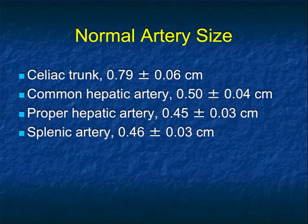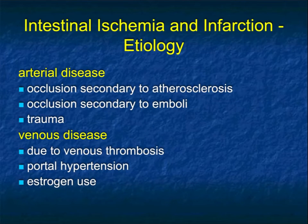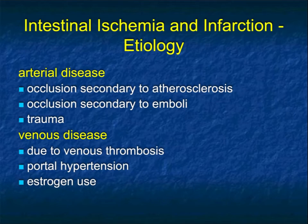When looking at the mesenteric vessels, I usually look at symmetry rather than measure things. We often see small vessels in hypotensive patients. If you need reference sizes: celiac trunk 0.8 cm, common hepatic artery 0.5 cm, proper hepatic artery just under 0.5 cm, and splenic artery about 0.5 cm or a little less — they're all about the same. Looking carefully at vessels is critical when evaluating for intestinal ischemia, whether arterial or venous disease, though arterial disease is more common, along with portal vein and SMV.